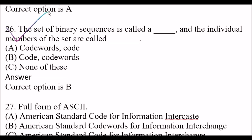Next question: The set of binary sequences is called blank, and the individual members of the set are called blank. Option A: code words and code respectively. Option B: code and code words respectively. Option C: none of these. The right answer is option B. The set of binary sequences is called a code and the individual members of the set are called codewords.